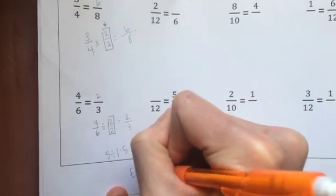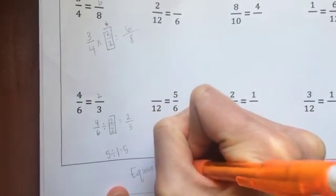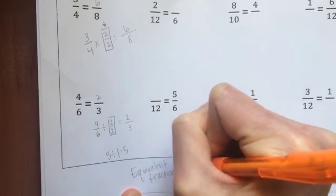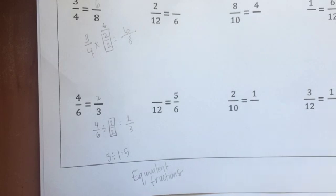Again, this is equivalent fractions, and we are applying the identity property in order to figure out what these equivalent fractions are.